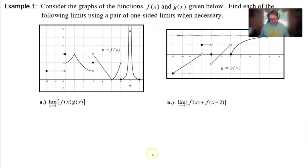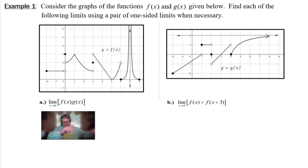So returning to our example, I'm going to get my camera over here so that I can refer to Problem B. It says consider the graphs of the function f(x) and g(x) given below. Find each of the following limits using a pair of one-sided limits when necessary.